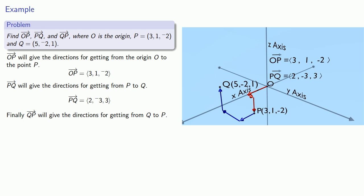Finally, to find the vector QP, we simply reverse those directions: go −2 units parallel to the x-axis, positive 3 units parallel to the y-axis, and −3 units parallel to the z-axis. So our vector QP is (−2, 3, −3).